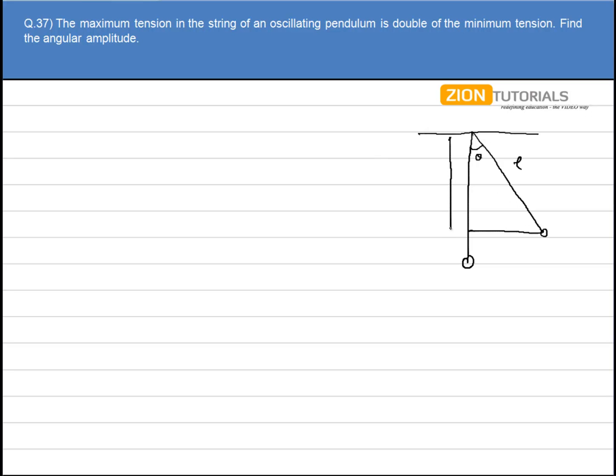So let's say the total length of the simple pendulum is L. This distance can be written as L cos theta, and this distance will be equal to L minus L cos theta.